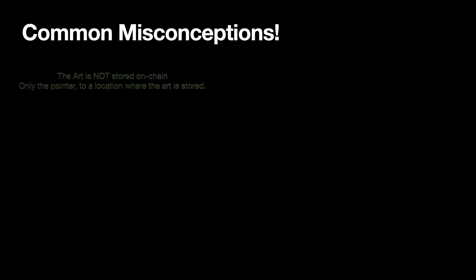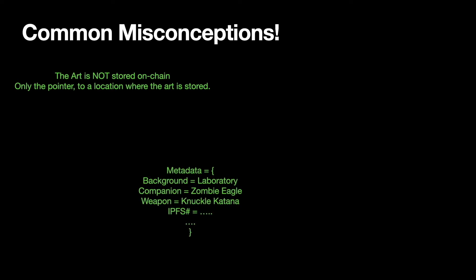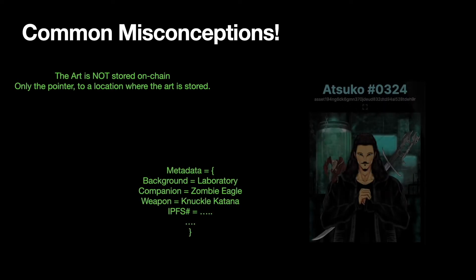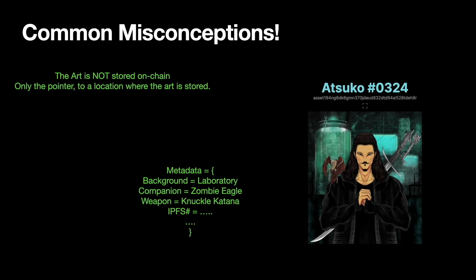Some common misconceptions. The art that we just looked at there is not stored on the blockchain — it's actually just a pointer to the art, which is usually stored elsewhere, and that's because of the size limits mentioned before. In this case, the art itself is being stored on IPFS, which is another storage facility on the internet. What's put in the metadata is a link to the art, and since that metadata can never change, that NFT will always point to this art, which also can't be changed.